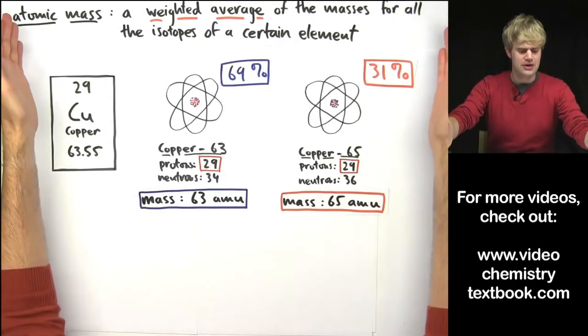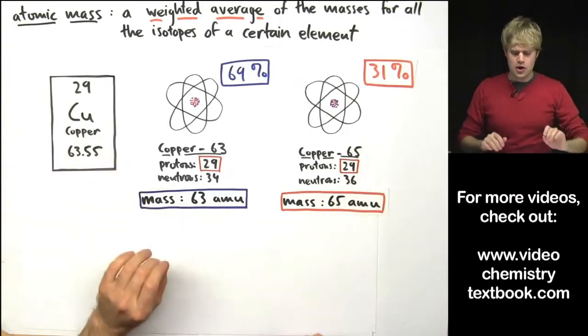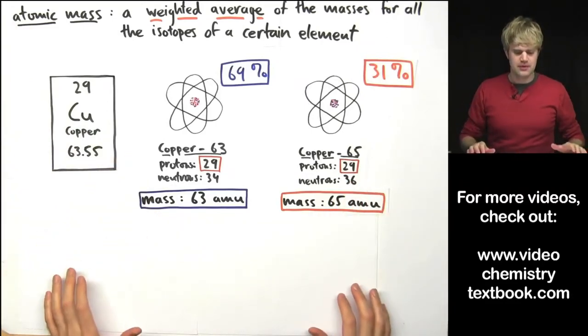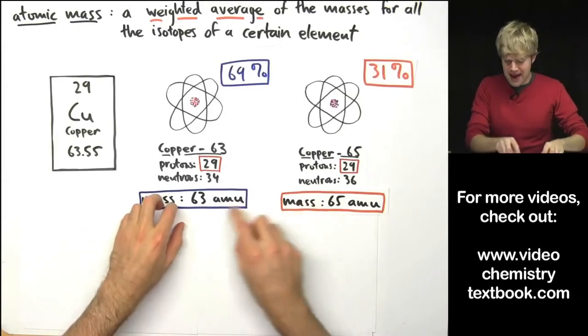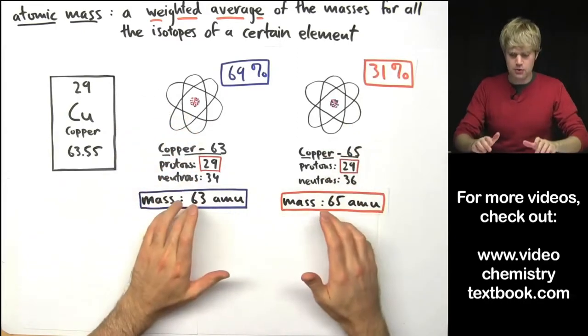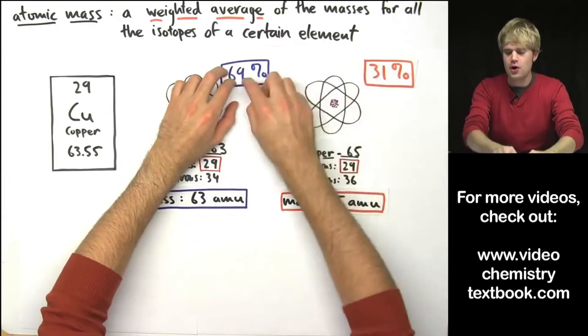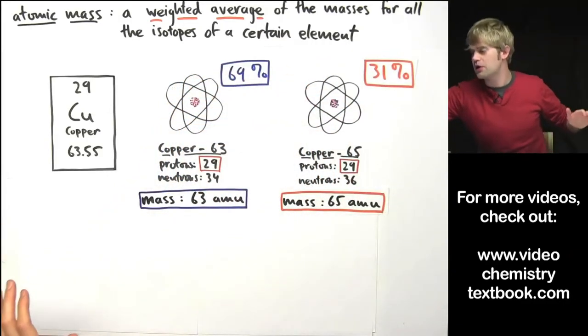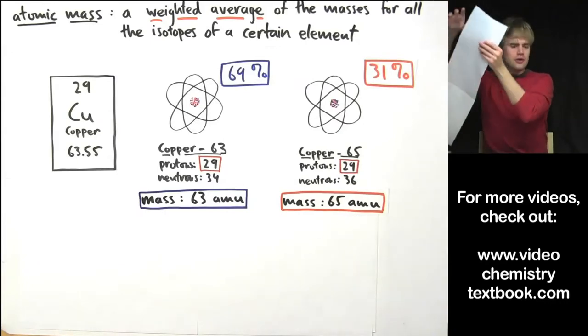So, to find the atomic mass, we need to do a weighted average calculation that takes into account the mass of each of these isotopes but also their percent abundance. And here's how we're going to do it. Remember how we did it with a Lamona?